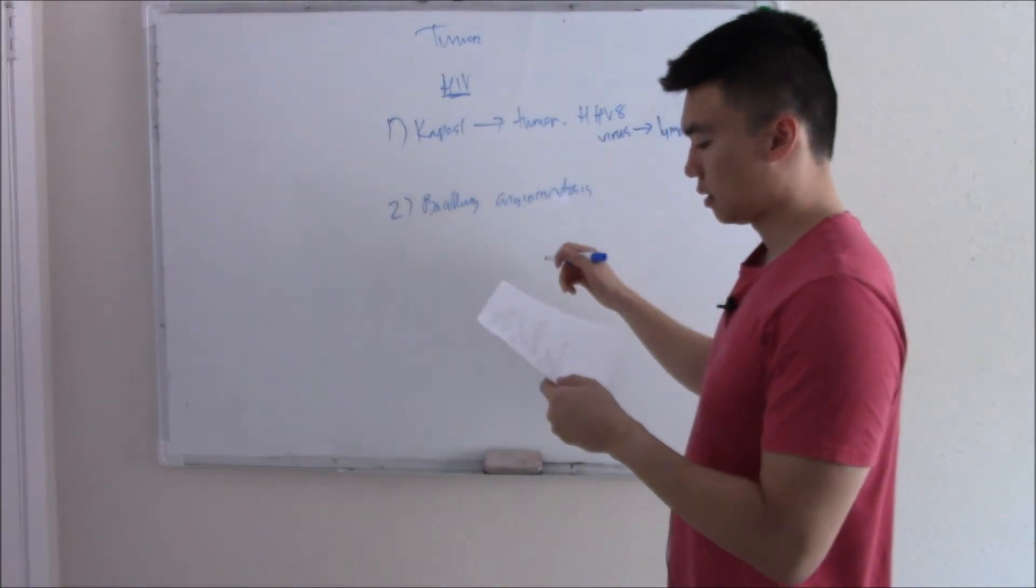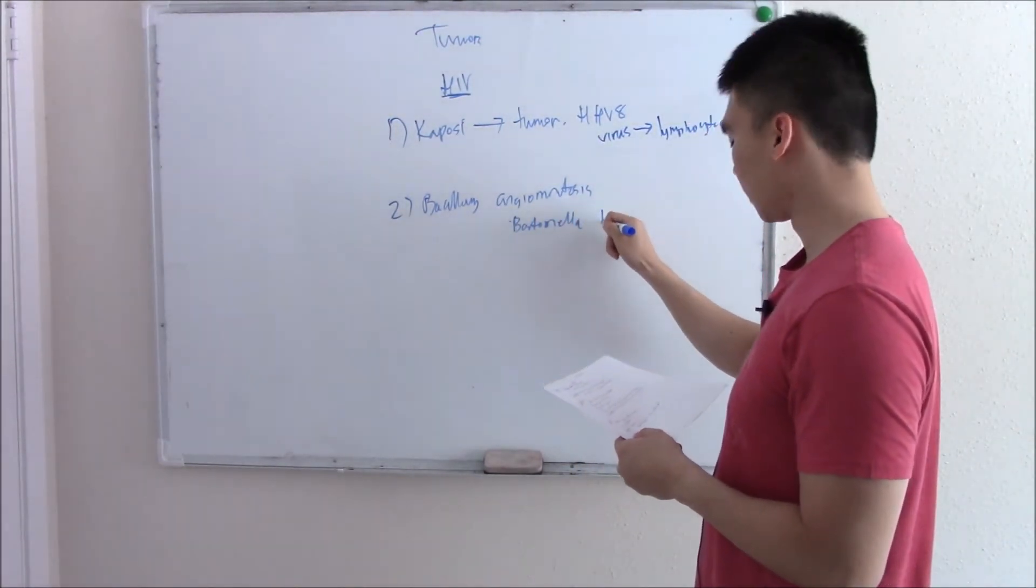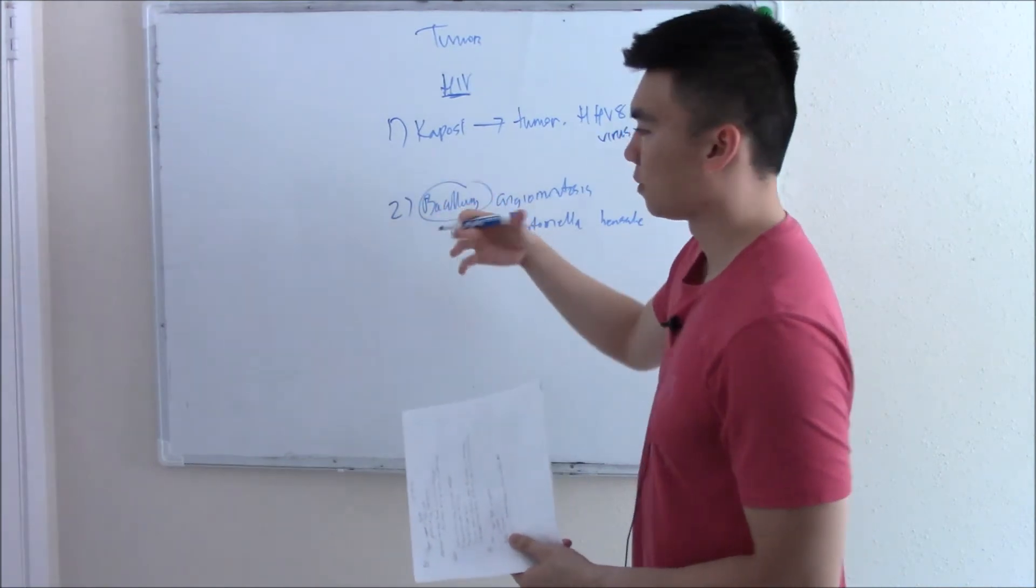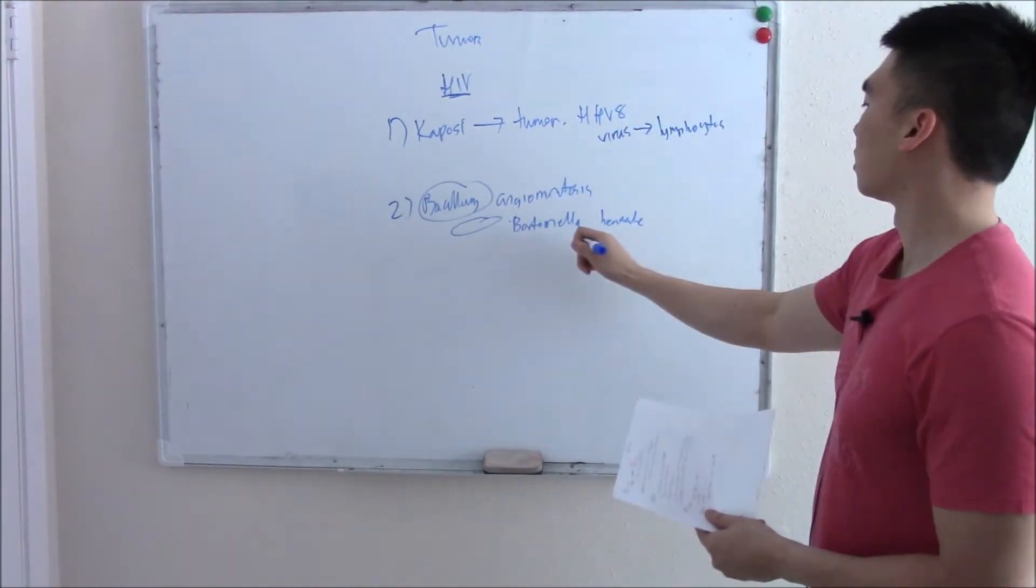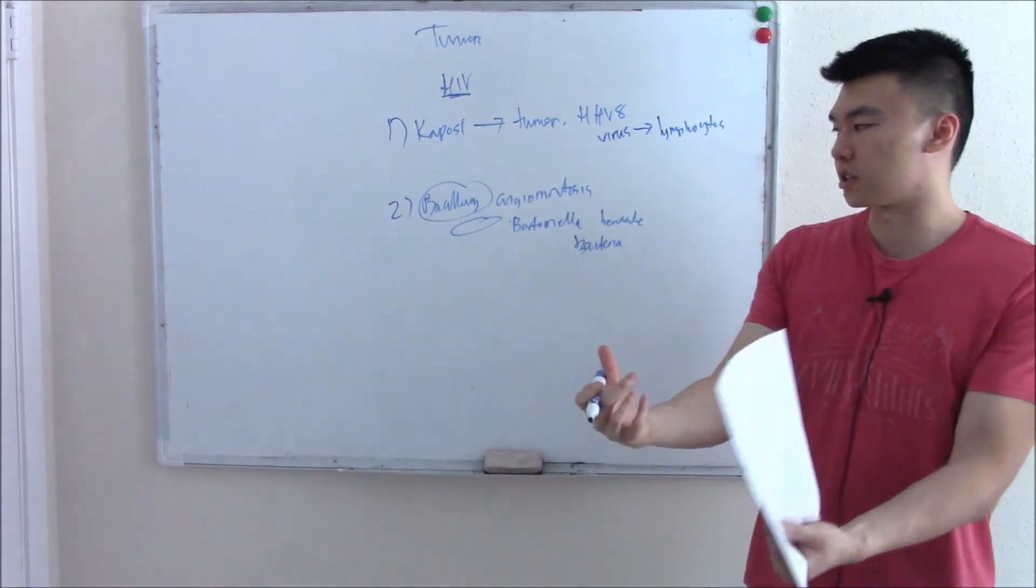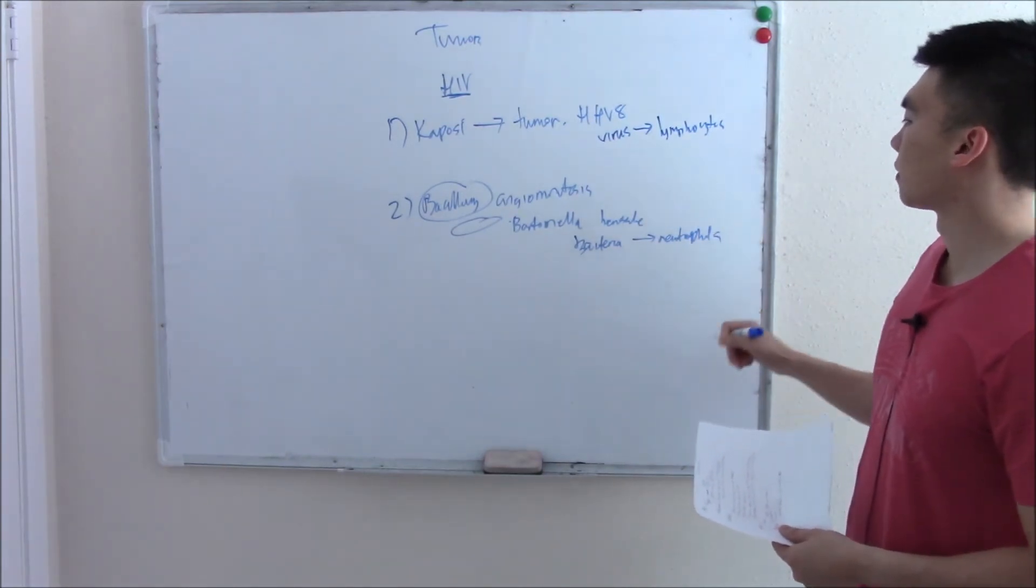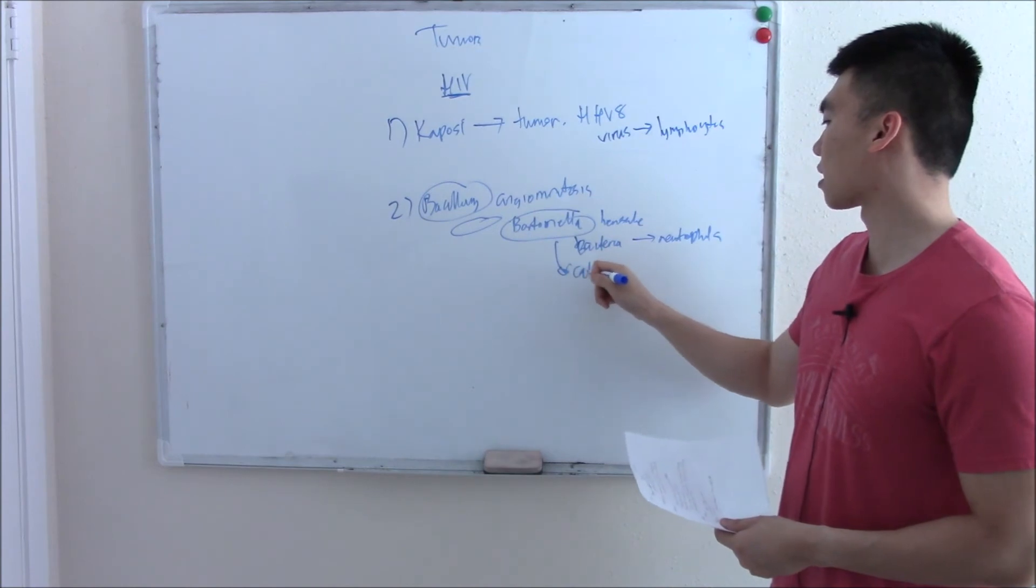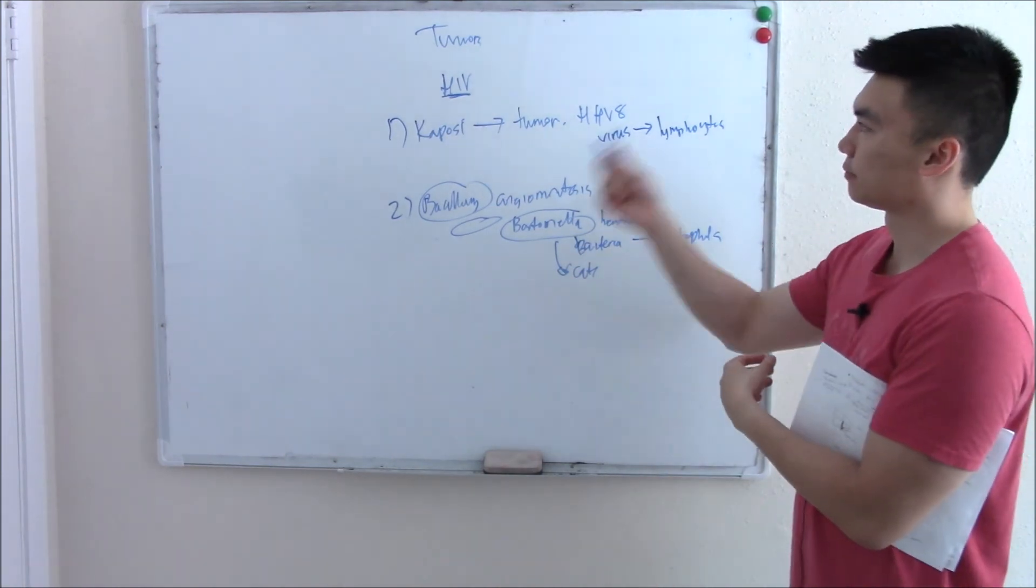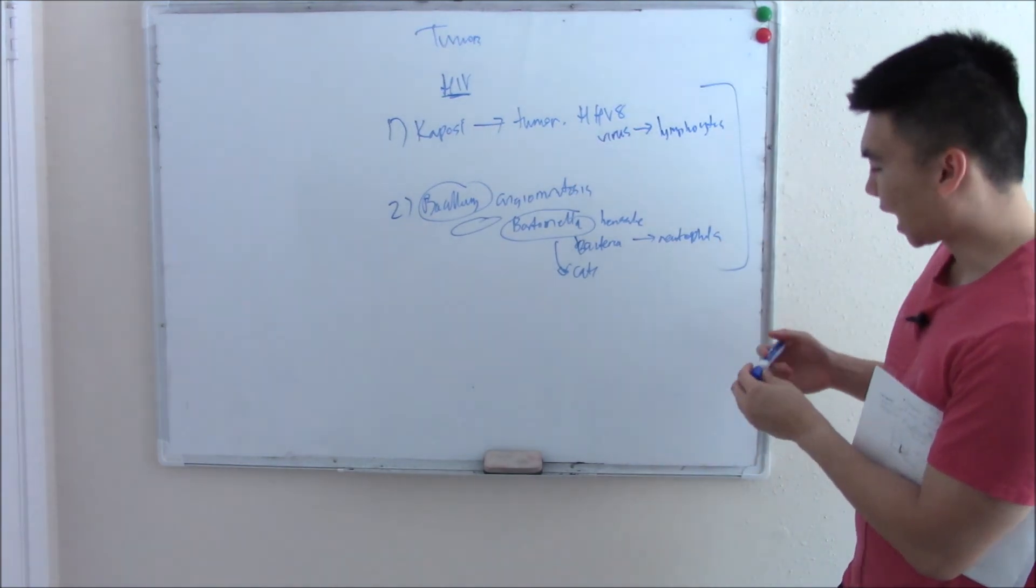Bacillary angiomatosis is due to the bacteria Bartonella henselae. And Bartonella henselae microscopically looks like a rod. That's why we call it bacillary. Bacillary means rod-like. So there's a bacteria. And when we have bacteria in our blood, what cells mount an immune response to it? Is it going to be neutrophils or is it going to be lymphocytes? It can be neutrophils. And if that isn't enough to give it away, Bartonella is seen in cats. So they'll talk about some cat exposure or they got scratched by a cat and then developed all these red bumps, vascular problems. That is bacillary angiomatosis. Hopefully you can tell these two apart.